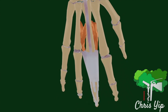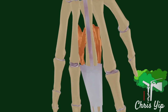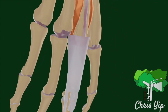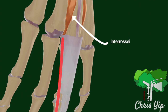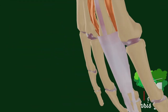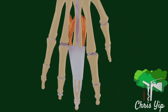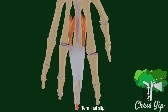The tendon continues distally past the extensor hood as the central slip, inserting at the base of the middle phalanges. Each side of the extensor hood is conjoined with the tendons of the interosseous muscles, as well as the tendons of the lumbricals. At the distal end of the extensor hood, two parallel tendons called the lateral bands emerge, which join together as the terminal slip to insert at the base of the distal phalanges.